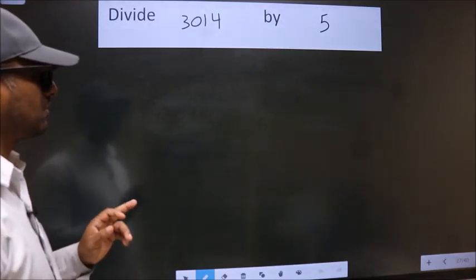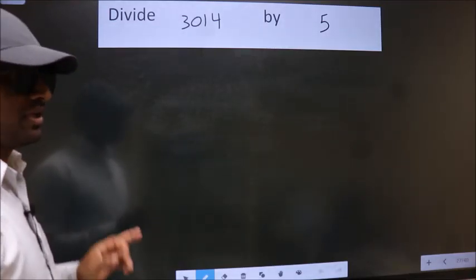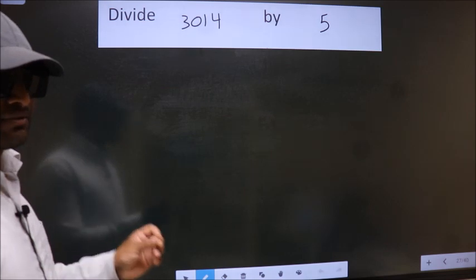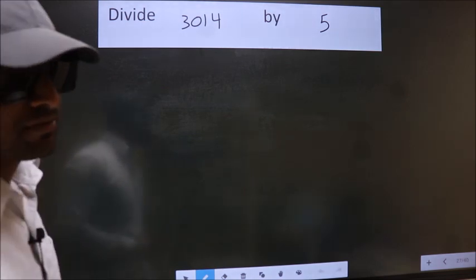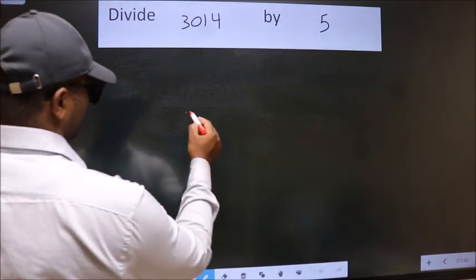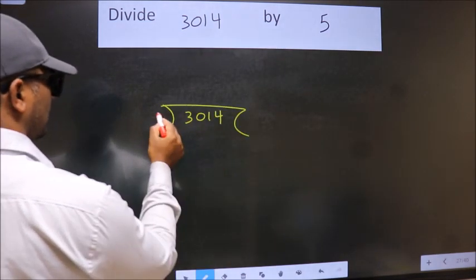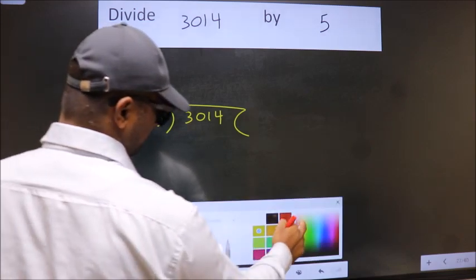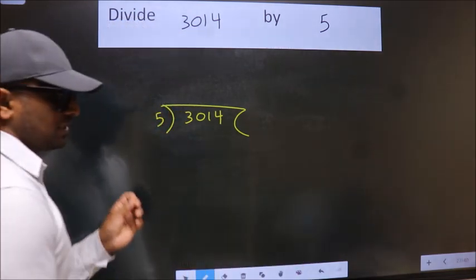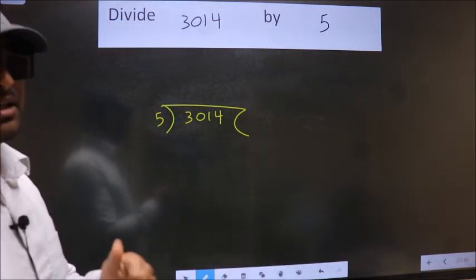Divide 3014 by 5. To do this division, we should frame it in this way. 3014 here, 5 here. This is your step 1.